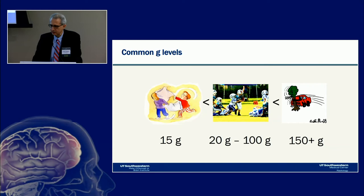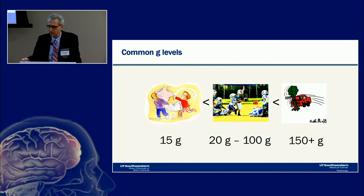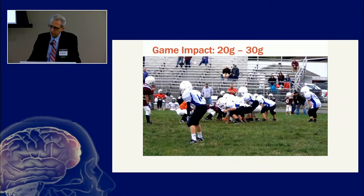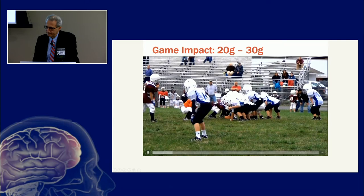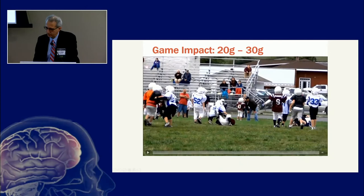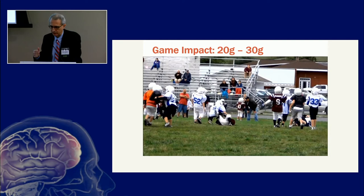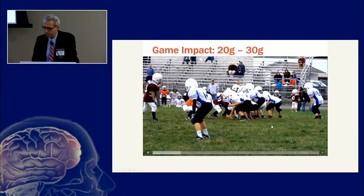To put G-force levels in context: an aggressive pillow fight between kids can be up to 15 Gs; a youth football game ranges from 20 to 100 Gs; and a severe car crash is 150-plus Gs. Importantly, these impacts are not always helmet-to-helmet — many are helmet-to-ground. Younger players are more susceptible because their neck muscles are less developed and offer less protection.